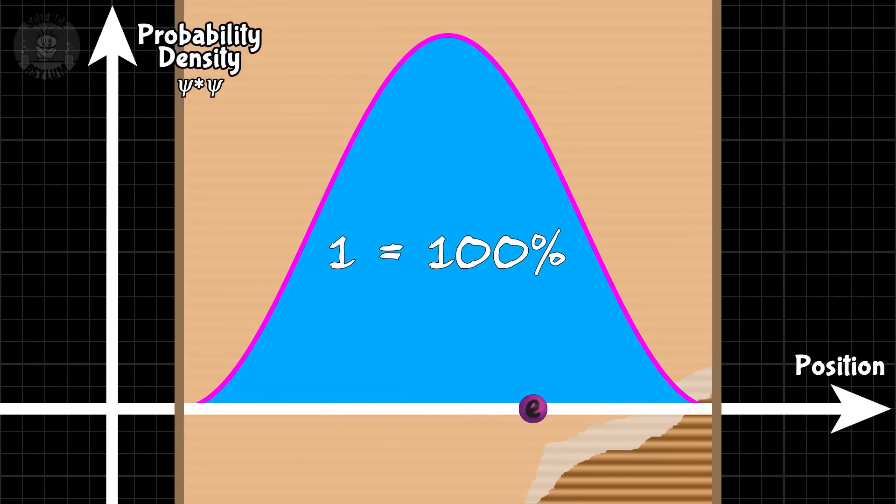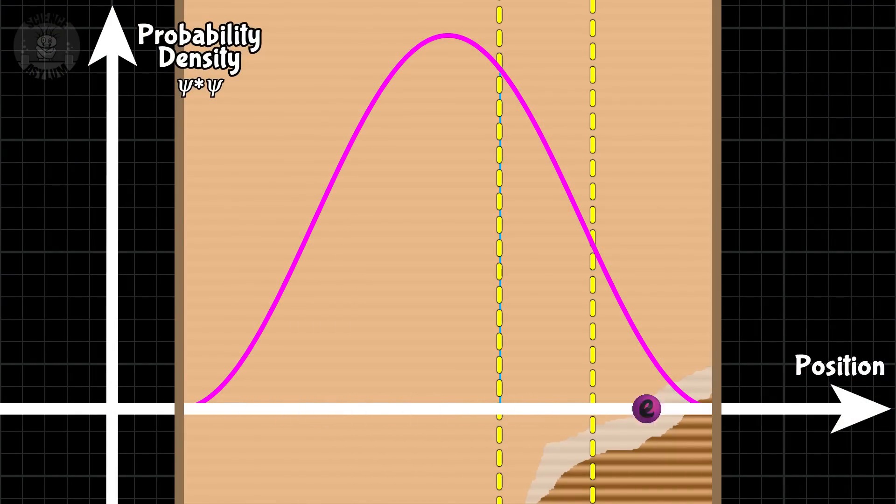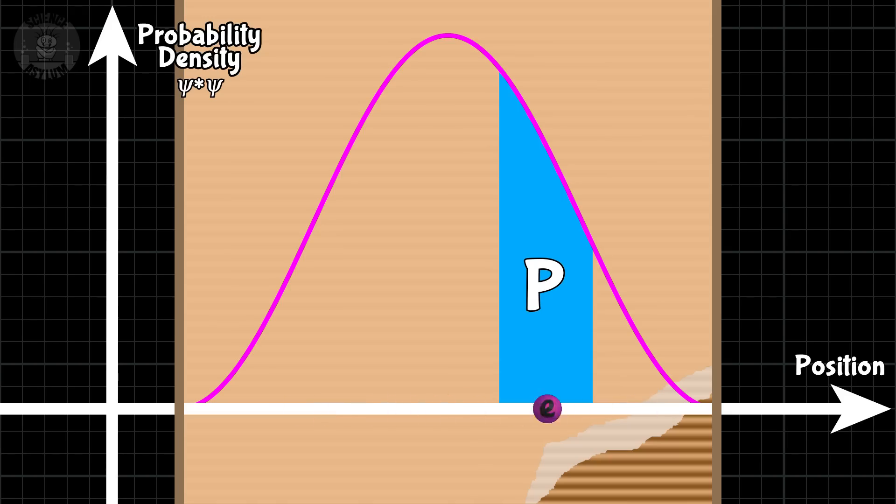But let's say we only want to know the probability of finding the particle between here and here. All we do is add up all the skinny rectangles between those two points. And the shaded area is the probability. It's that easy. You can clearly see that some areas have a higher probability than others.